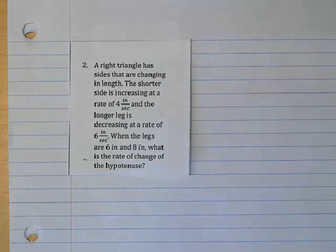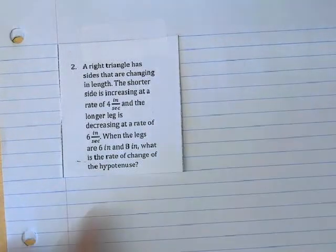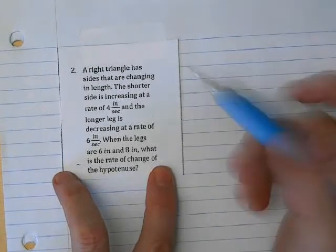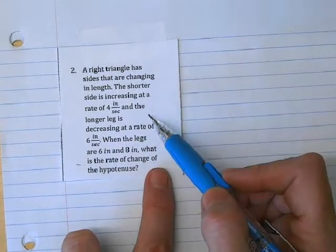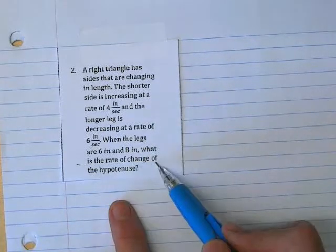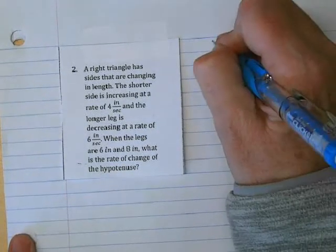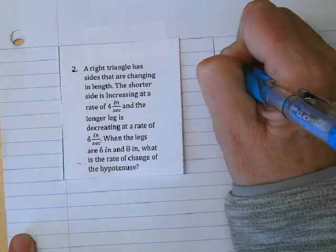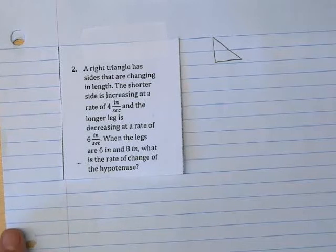Just in case we don't get all the way finished in class, I made a video. If we get this one done in class, just skip ahead to the next one. So we have a right triangle here, and the sides are changing.